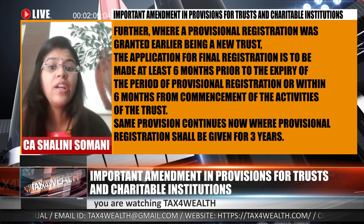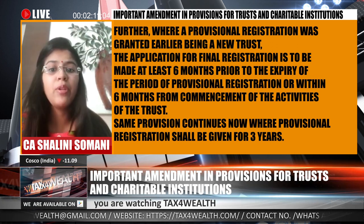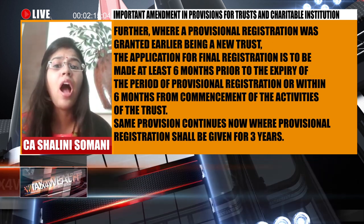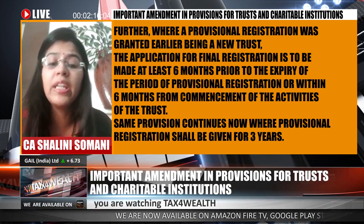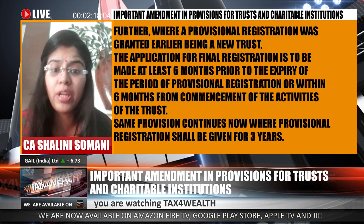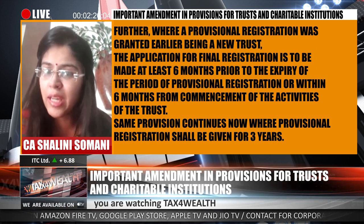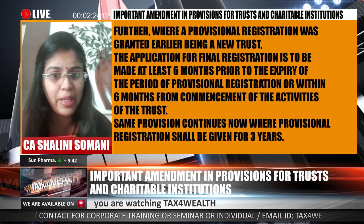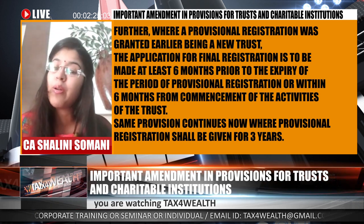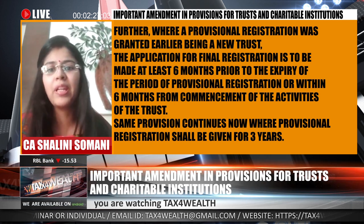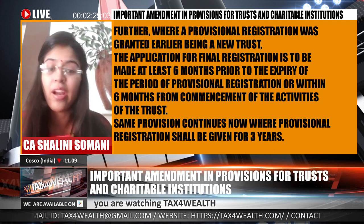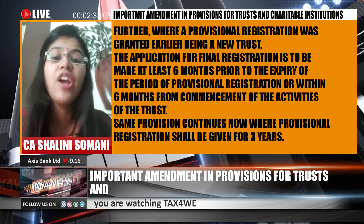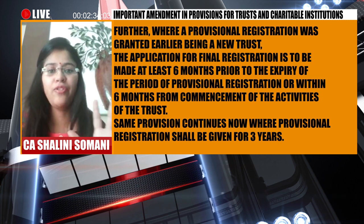Provisional registration which shall be valid for three years۔ تین سال میں اگر آپ charitable object start نہیں کر پاتے، جیسے کہ آپ کی school کی construction building work in progress ہے اور تین سال میں complete نہیں ہوئی، تو آپ کو واپس apply کرنا ہے چھے مہینے پہلے۔ Department آپ کو واپس تین مہینے کا provisional registration اور دے گا۔ اور اگر آپ کی building بن چکی ہے تو آپ کو final registration لے لینا ہے which shall be valid for five years۔